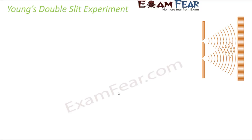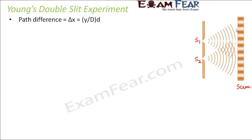Young performed this double slit experiment where you have two slits — slit number one and slit number two, called S1 and S2. Basically, light from these two slits comes from two different sources, S1 and S2. And on the screen you see alternate dark and bright bands, which is the phenomenon of interference.